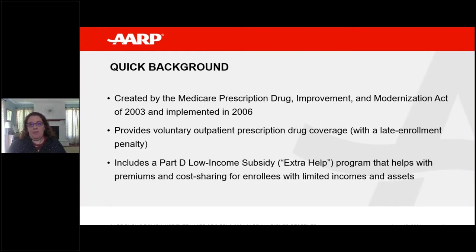In terms of where Medicare Part D came from, it's actually a relative newcomer. Medicare itself has been around for about 40 years, and Medicare Part D was implemented in 2006. The program provides voluntary outpatient prescription drug coverage, though there is actually a late enrollment penalty. If you go longer than two months without coverage comparable to Medicare Part D, you will pay an extra amount onto your premium every month for the time that you are in the program, which is intended to encourage people to have prescription drug coverage. Another really important part of the program is the low-income subsidy, also known as extra help, which can provide a lot of help with premiums and cost sharing for enrollees who have limited income and assets.